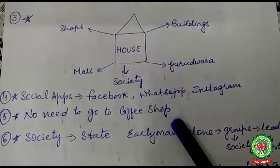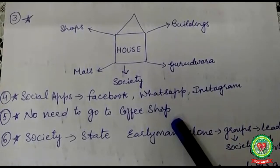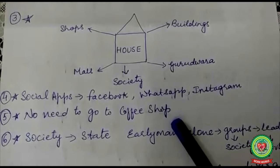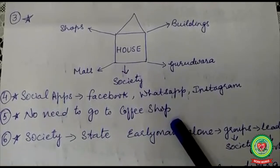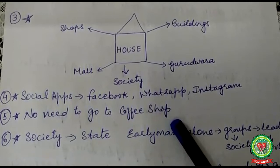Society is a part of our life. It's not necessary that in society all are similar or like each other. Each society has its own culture — a set of traditions, habits, understandings, beliefs, and values. The state came into existence after the birth of society, so there are some differences between state and society.